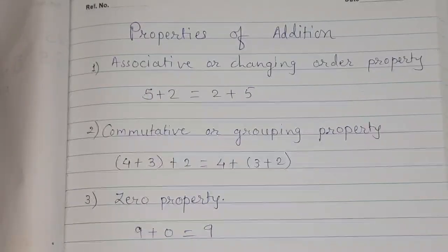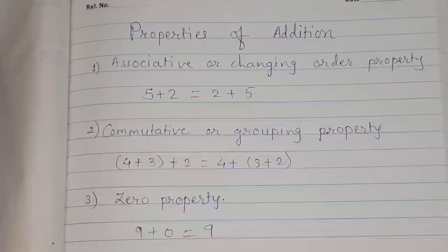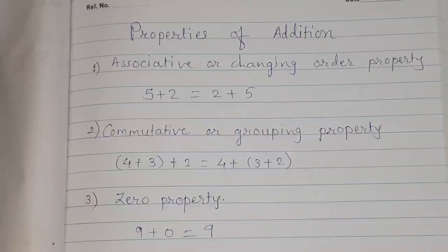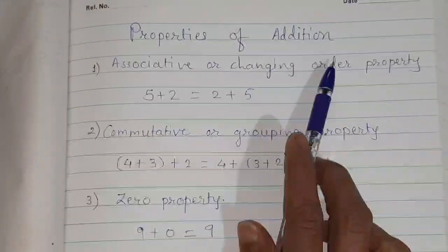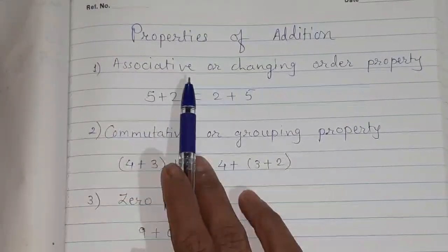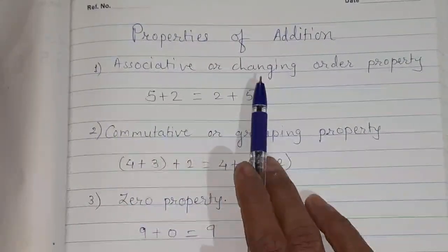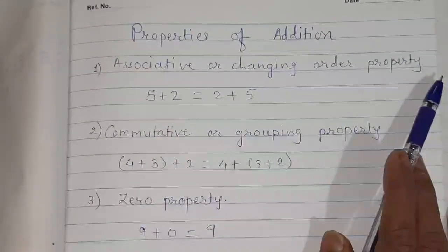Now, what we have learned in addition, we will just look at it. We have learned properties of addition. In this one, we have learned first property, associative property or which is called changing order property.